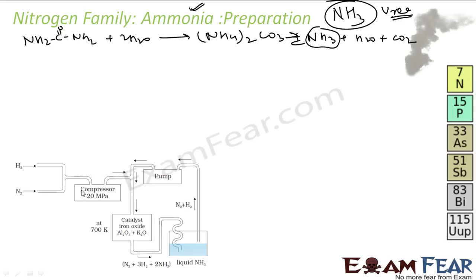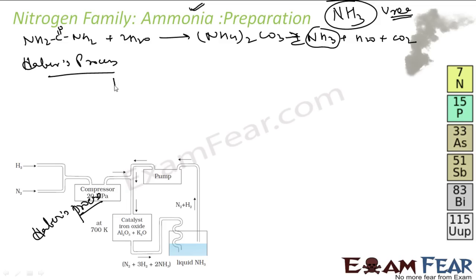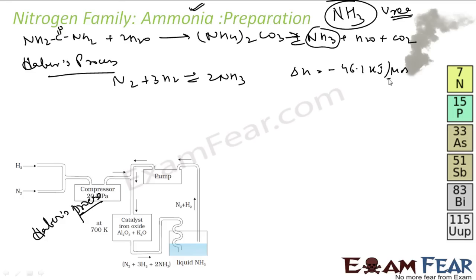But on the large scale, Haber's process is used. In Haber's process, the typical reaction is N2 + 3H2 → 2NH3. It has complicated steps, but the overall reaction is nitrogen plus hydrogen gives ammonia, and ΔH is −46.1 kJ per mole.